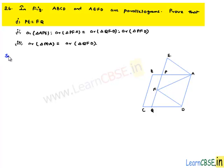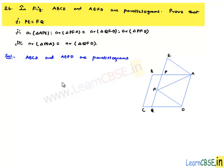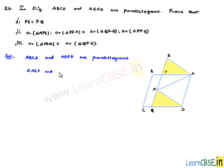Now moving on to the solution. Let us note the given information that ABCD and AEFD are parallelograms. In order to prove the first thing, let us consider both triangles: triangle AEP and triangle QFD.